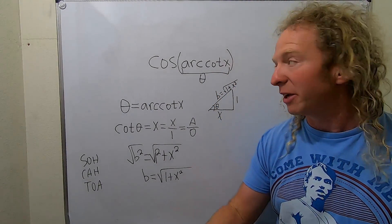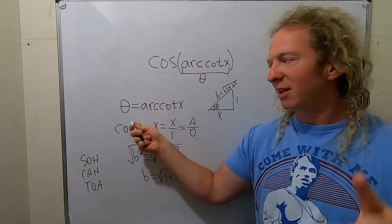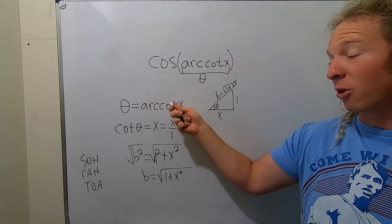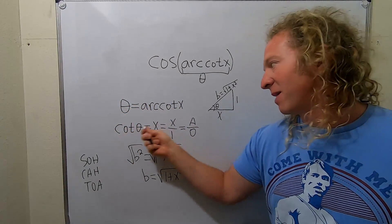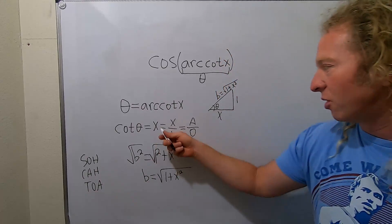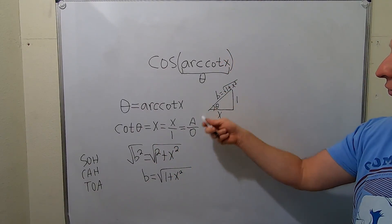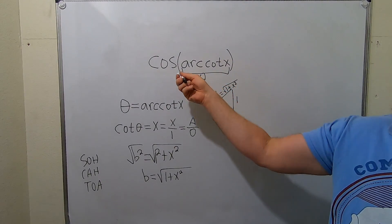So recap because we're almost done. Step one call it theta. Then use the fact that the arccotangent of x takes x and sends it to theta. So cotangent takes theta and sends it back to x. You use SOHCAHTOA. This is ao. Draw a triangle. Solve for your triangle sides. Find all of the sides. And now go back to the original question.